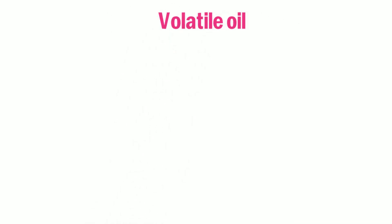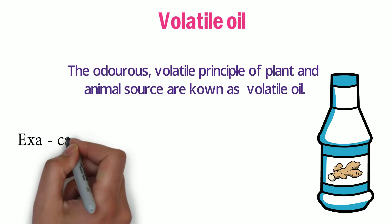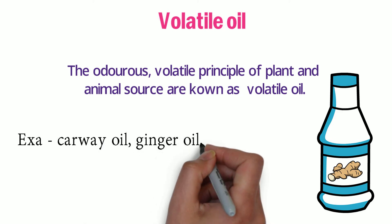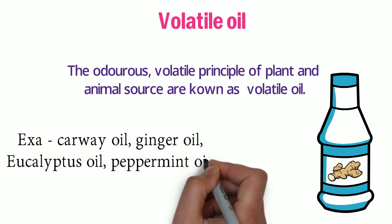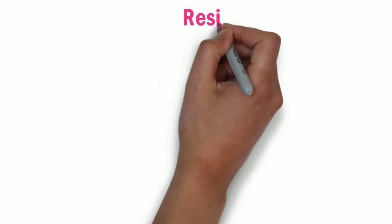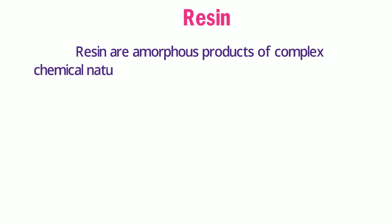The odorous volatile principle of plant and animal source are known as volatile oils. Examples include caraway oil, ginger oil, eucalyptus oil, peppermint oil, and clove oil. Resins are amorphous products of complex chemical nature obtained from natural or synthetic origin.